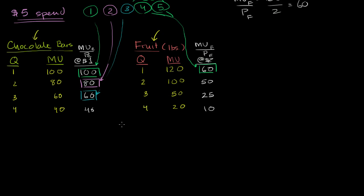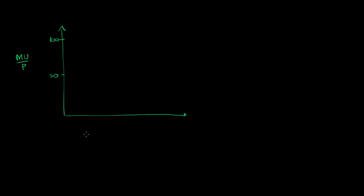What I want to do in this video is generalize it — consider a more continuous case where we can buy very small increments of each product, not in chunks like chocolate bars. I'm going to plot the marginal utility per price, which is really bang for your buck, on the vertical axis. Let's say it goes from zero to 100, so 50 would be the midpoint. And the horizontal axis will be dollars spent — one, two, three, four, five, six.